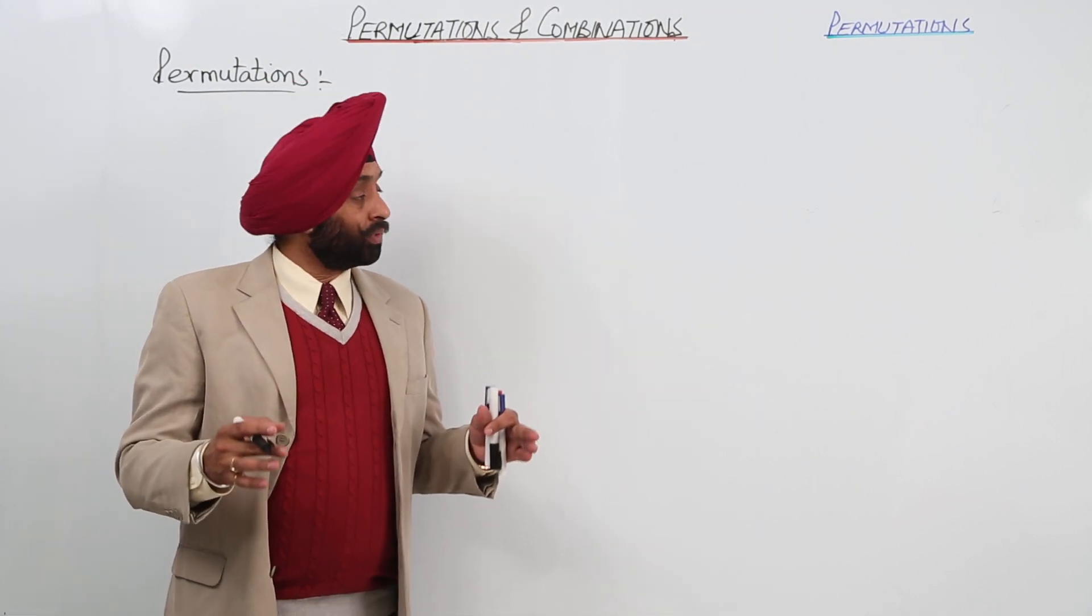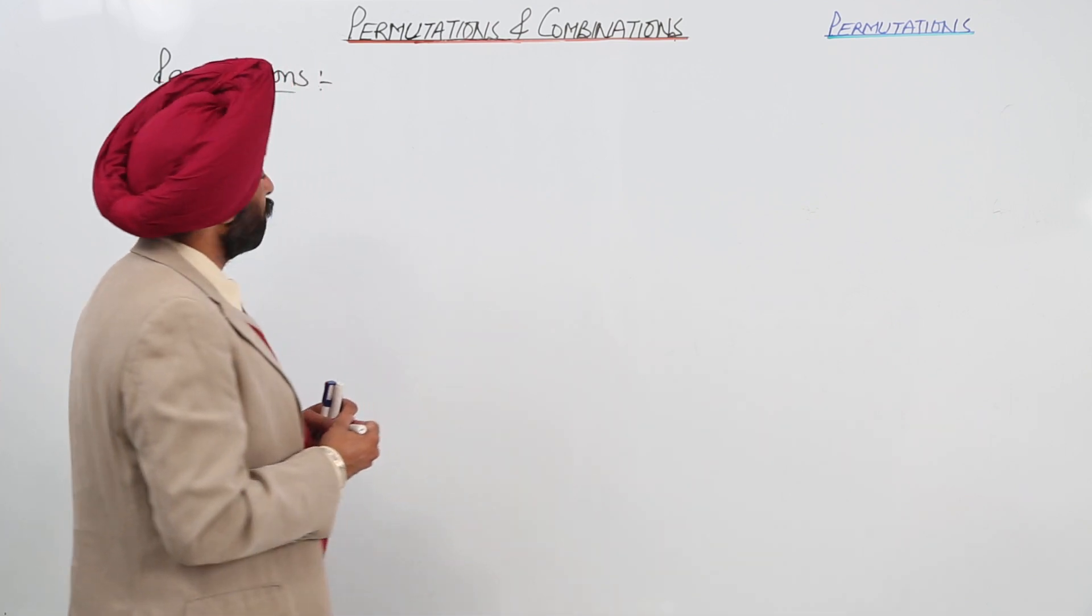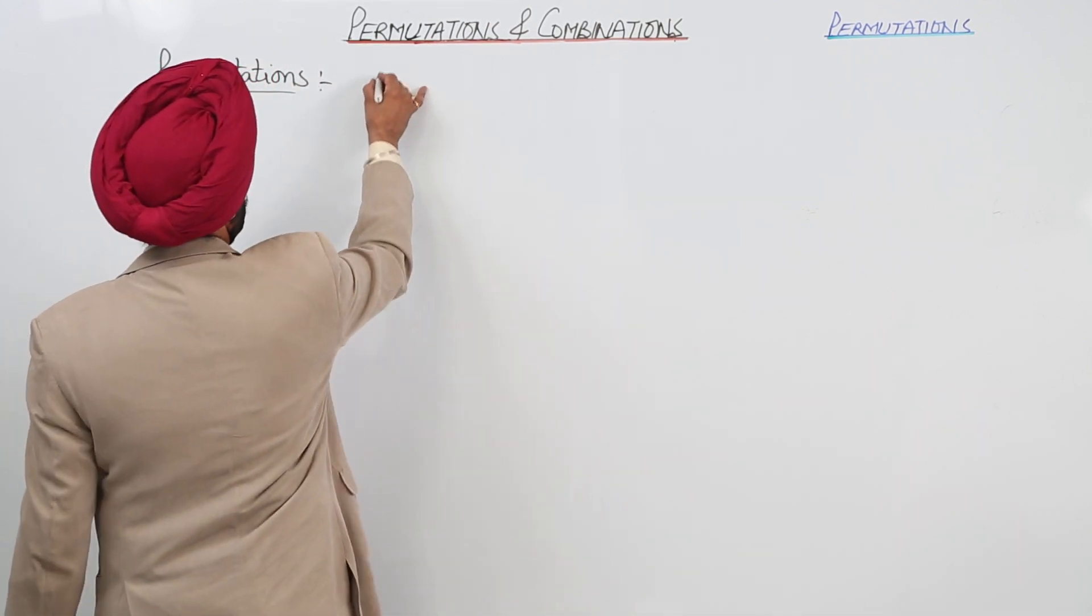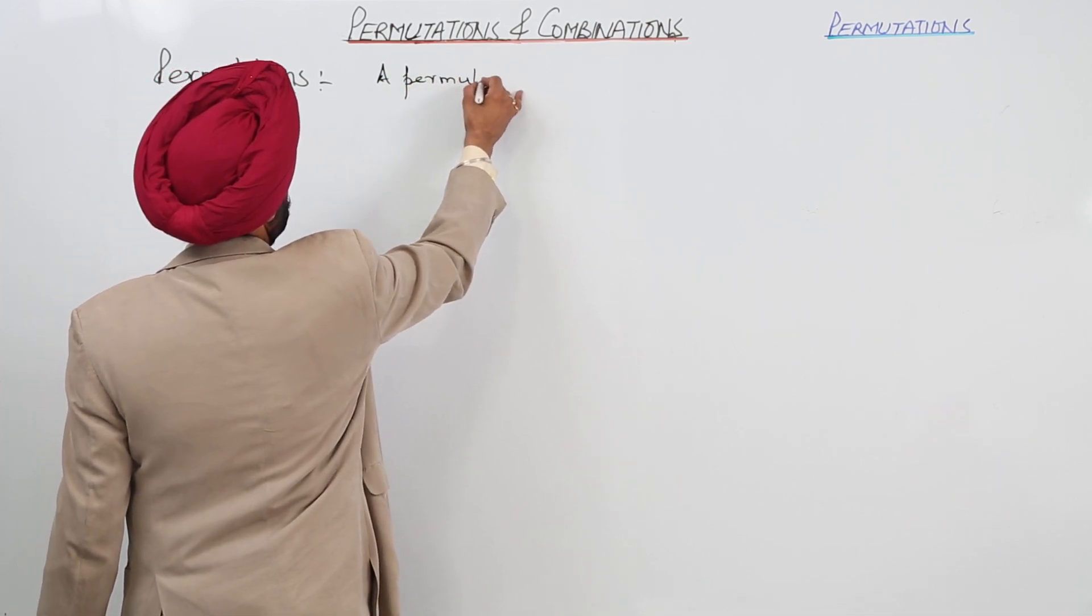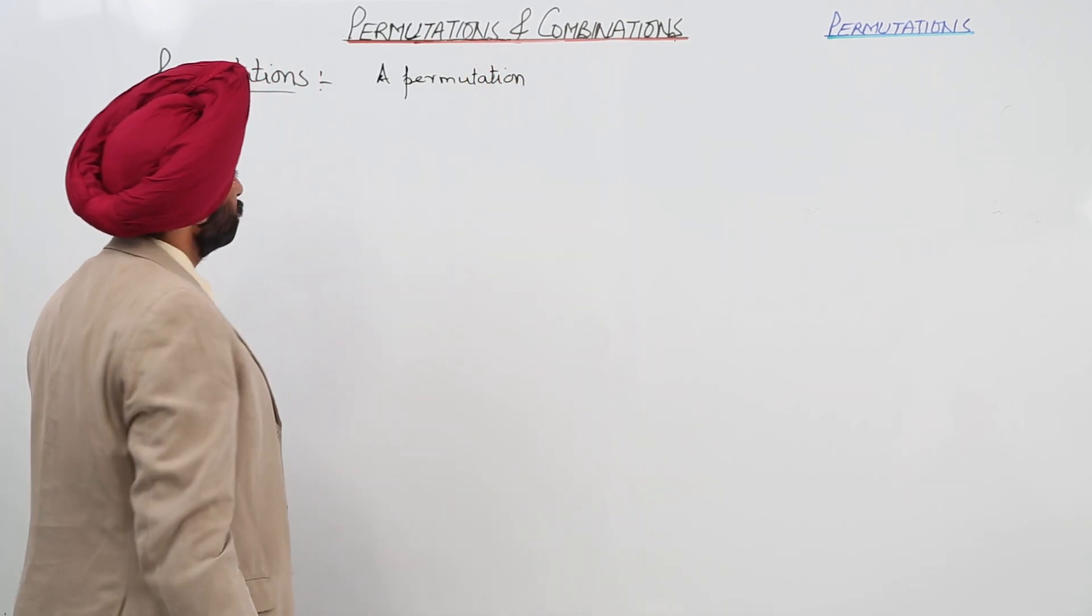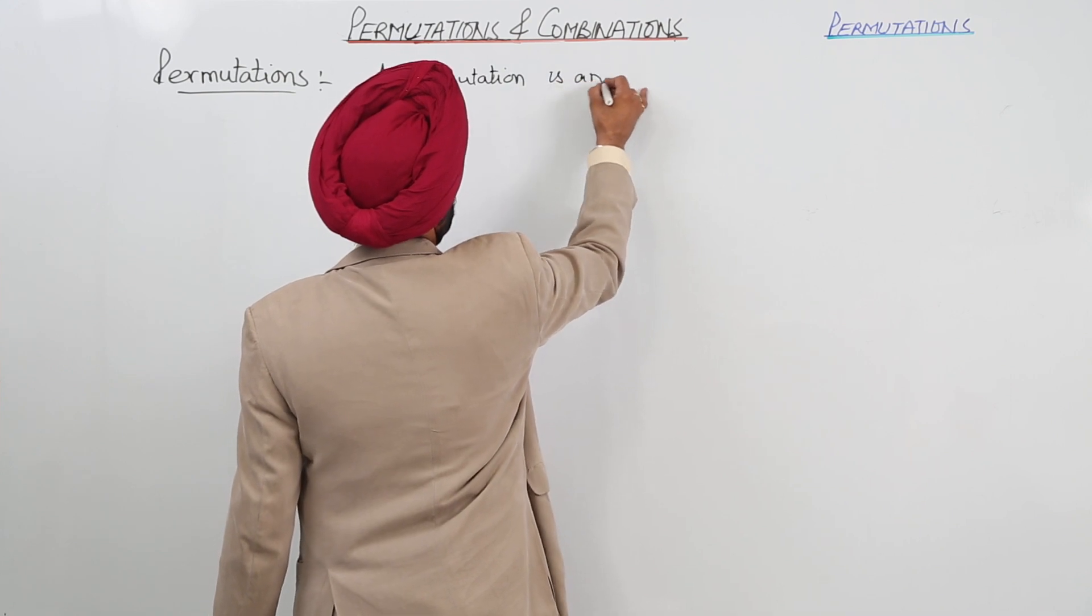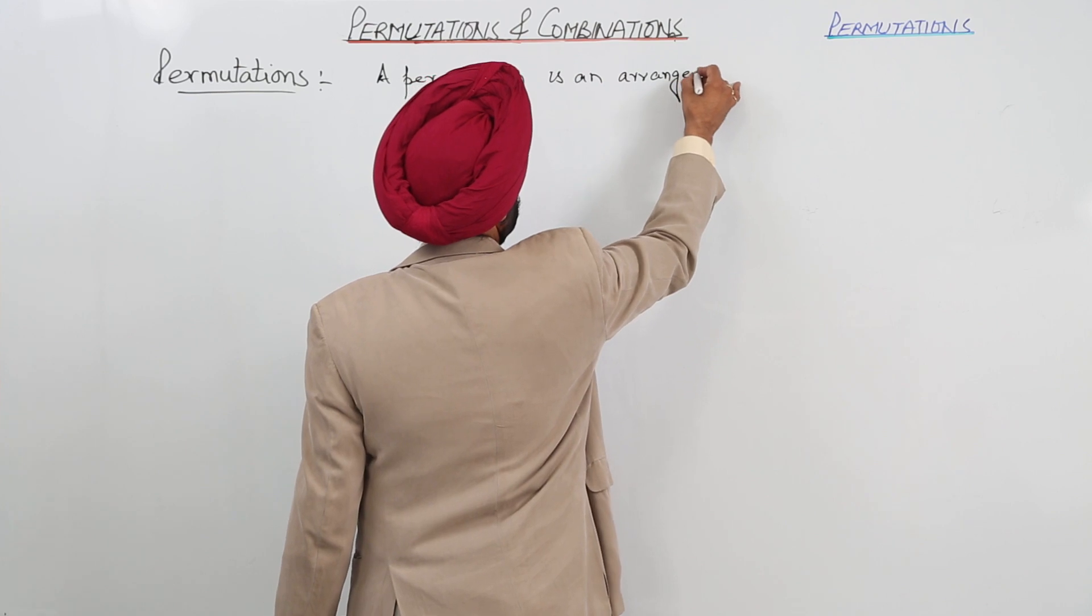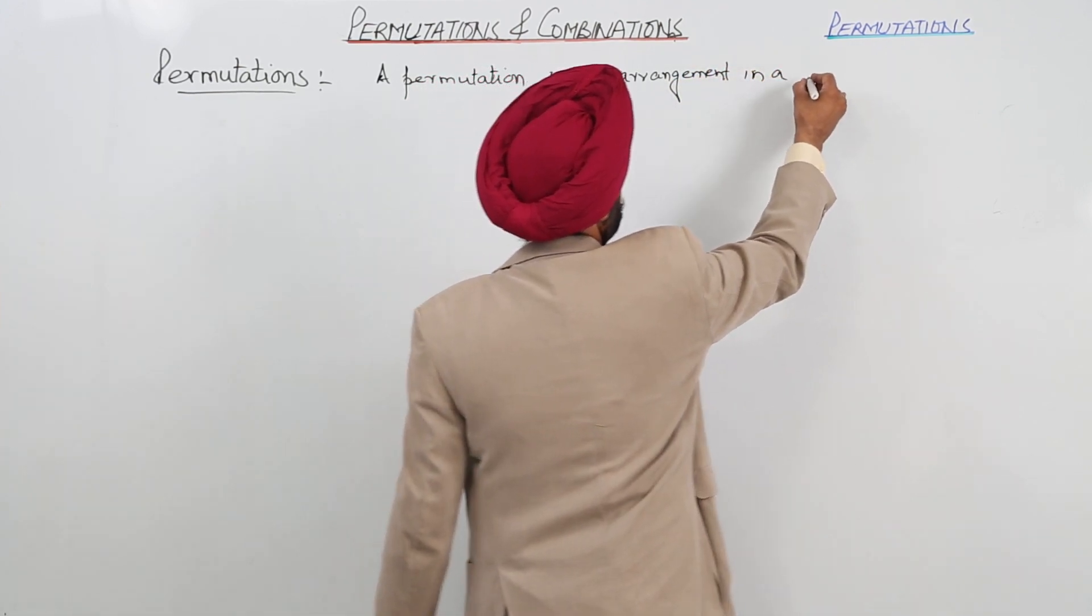Now let's proceed for the important topic that is permutation. First of all, I will just give you a definition for it. A permutation is an arrangement in a definite order.